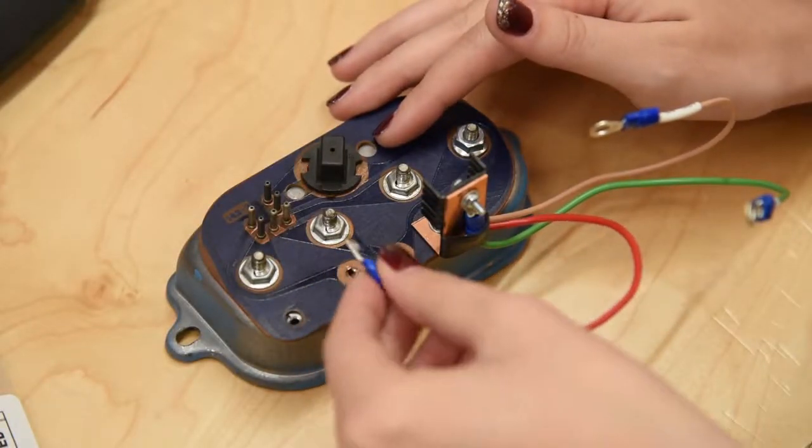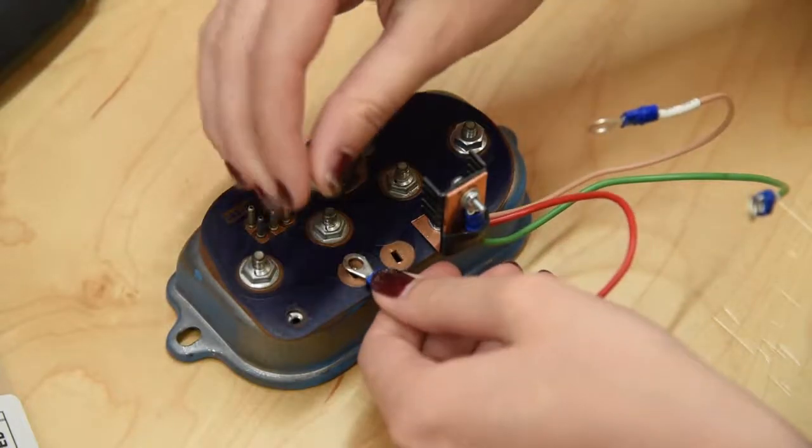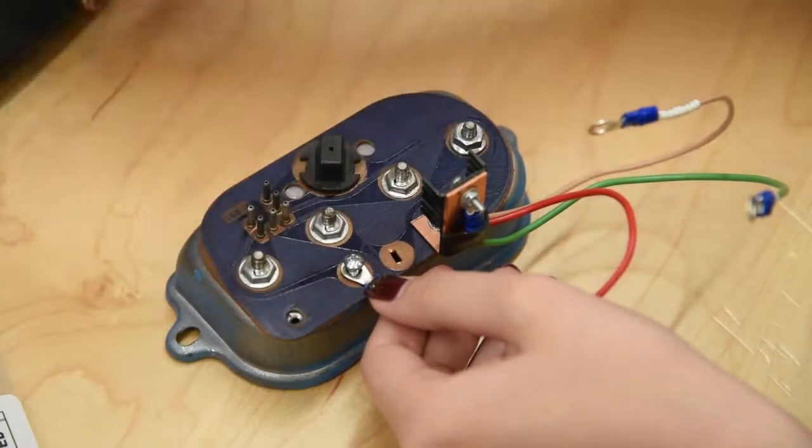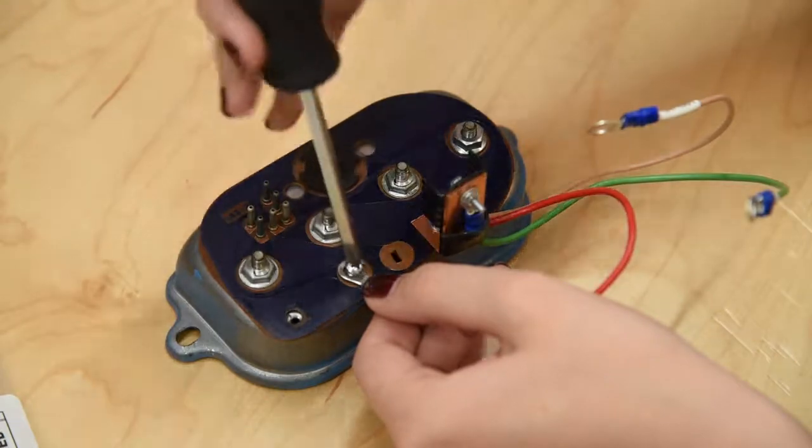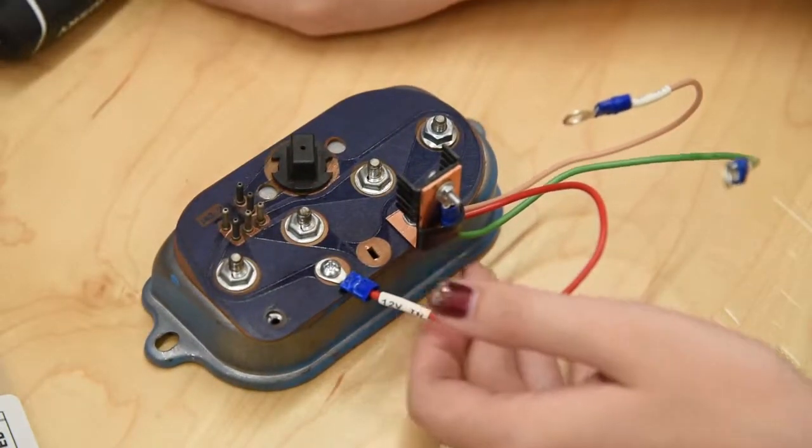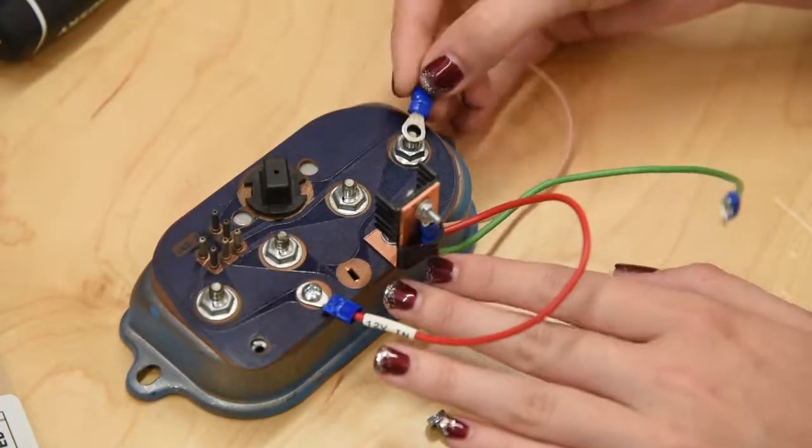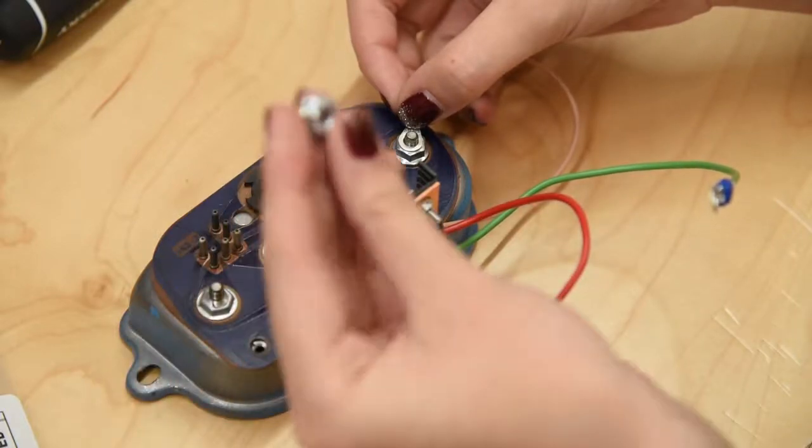The red wire connects to this point here with the screw provided. Then, the brown wire connects to this point here with the nut provided.